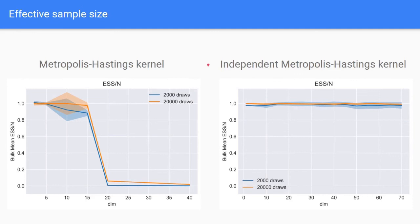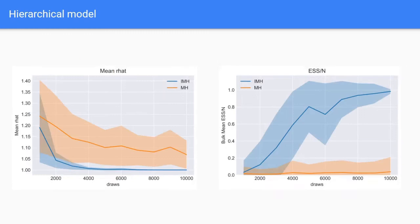When analyzing the samples from the Metropolis-Hastings kernel, we can see that this metric falls sharply around dimension 20, which is consistent with what we saw with R-hat. For the independent Metropolis-Hastings kernel, we can see that this metric stays constant at around 1 even for greater dimensions.